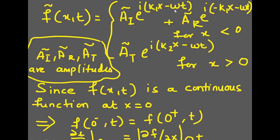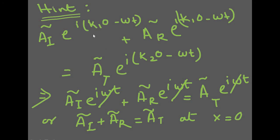Substituting x equal to 0 into the wave equations, the left-hand side equals the right-hand side. Each term gives e raised to minus i*omega*t. Canceling e raised to minus i*omega*t from both sides, we get A_i plus A_r equal to A_t at x equal to 0. This is the first boundary condition.